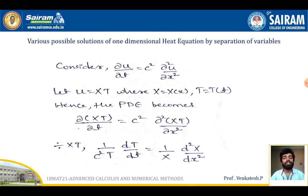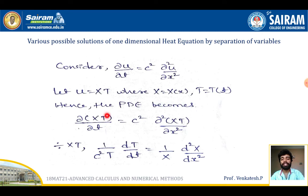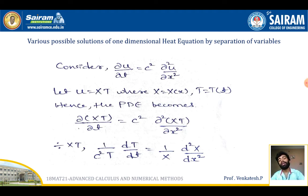Next, I am going to consider the various possible solutions of the one-dimensional heat equation by using separation of variables. Consider the heat equation: ∂u/∂t = c² · ∂²u/∂x². Let u = X·T, where X is a function of x and T is a function of t. Substituting gives X · dT/dt = c² · T · d²X/dx². Dividing by c²XT gives (1/c²T) · dT/dt = (1/X) · d²X/dx².